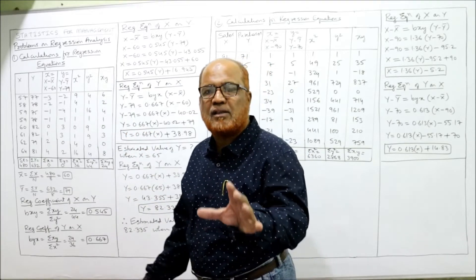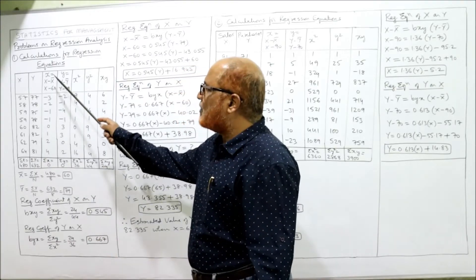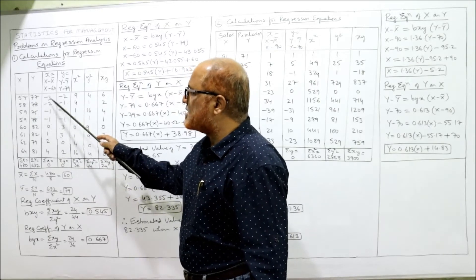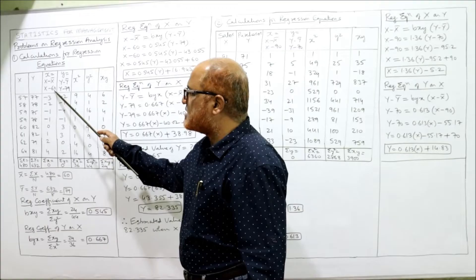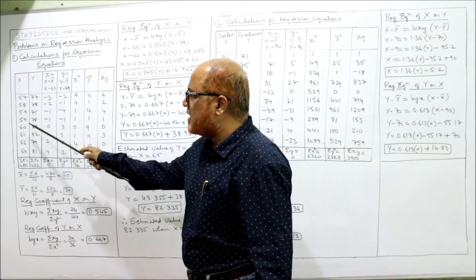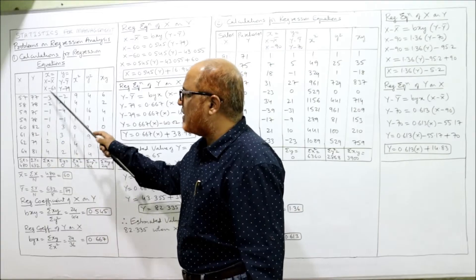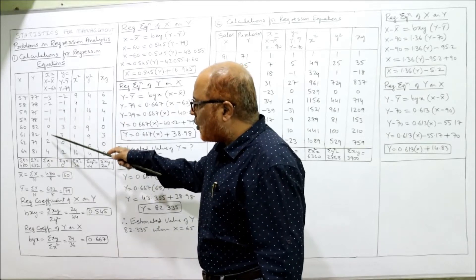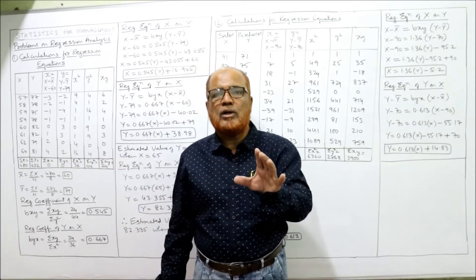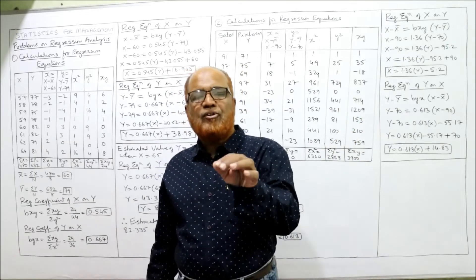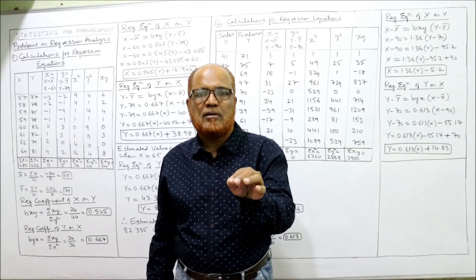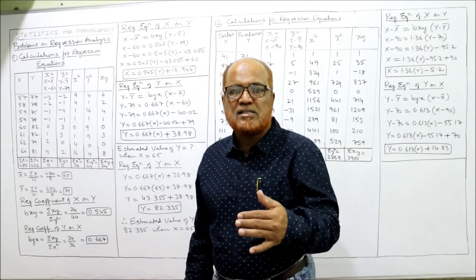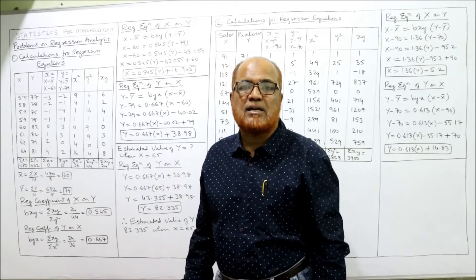Calculate small x as X minus 60: 57−60=−3, 58−60=−2, 59−60=−1, 59−60=−1, 60−60=0, and so on. Take the total — you must get summation x equals 0. I told you this in the correlation chapter also: if you take deviations from the actual mean, the total must be 0. If you do not get 0, you have made a calculation mistake — do not proceed ahead.